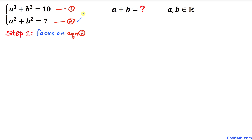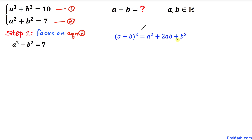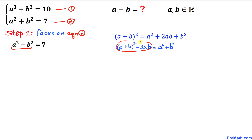Let's focus on equation two. Let's recall this famous identity: (a+b)² = a² + 2ab + b². Moving 2ab to the left hand side, a² + b² = (a+b)² − 2ab. Replacing a² + b² gives us (a+b)² − 2ab = 7. Let's call this equation number 3.